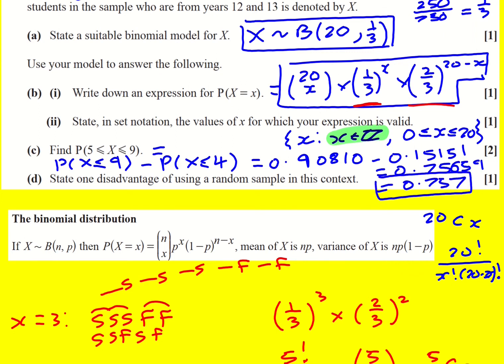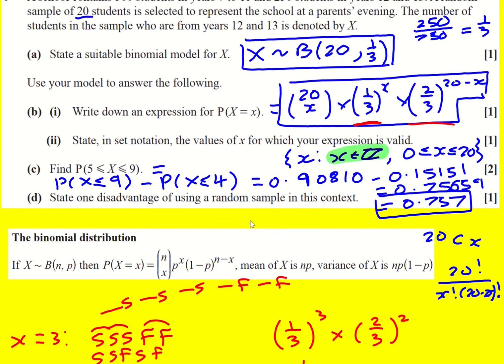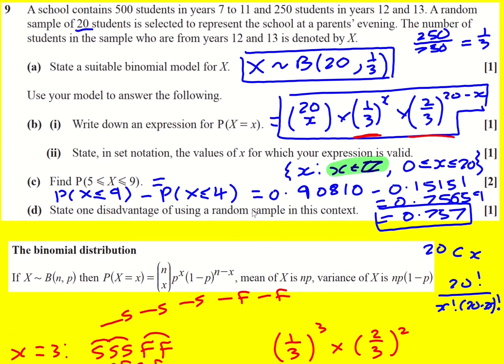Finally d, it says state one disadvantage of using a random sample in this context. Now remember there's different types of random sampling, there's for example stratified or systematic, but this question because basically everyone has, the year 12 to 13s have a one-third chance of being picked, we can kind of assume that we're doing a simple random sample because everyone has an equal chance of being picked essentially.